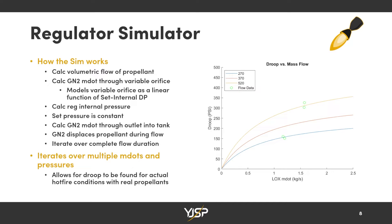I can then calculate all the pressures throughout the regulator — upstream, inside, and downstream. Basically, I iterate on all of this repeatedly as the tank pressure depletes over an entire flow. I find the initial steady-state pressure before the flow and the pressure during the flow, which allows me to find the droop. I then repeat that over and over for a range of different mass flows and pressures to build up the plot on the right.